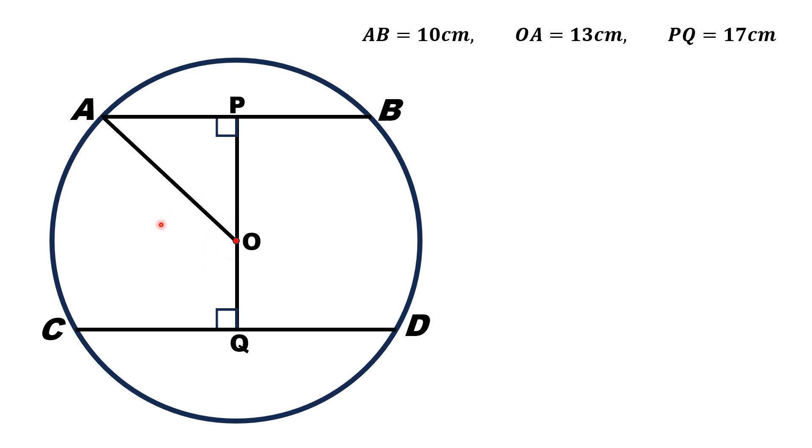Now, we focus on triangle OPA. From here, hypotenuse is OA and AP and PO are different sides of the right triangle. By using the Pythagorean theorem, OA squared is equal to AP squared plus PO squared.